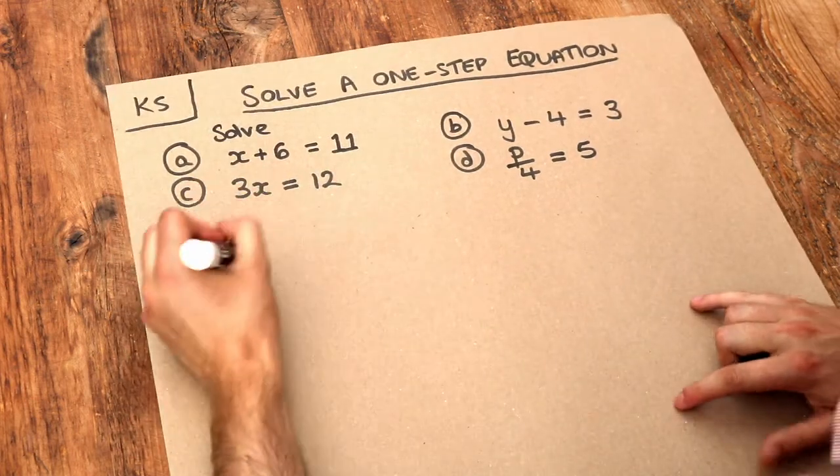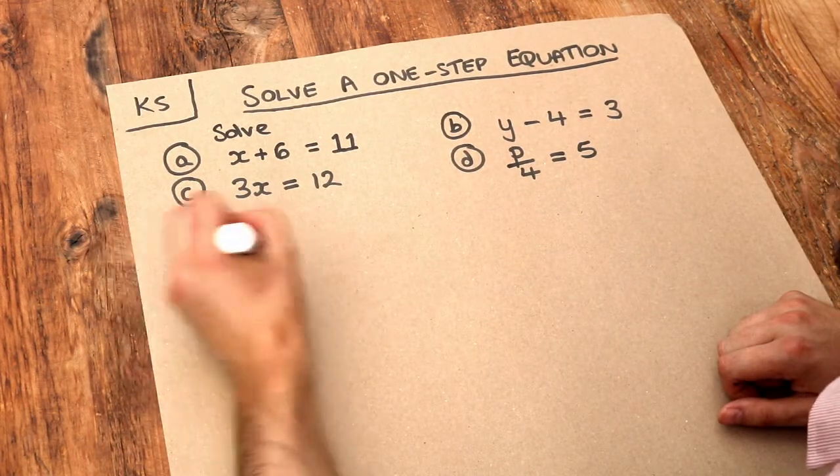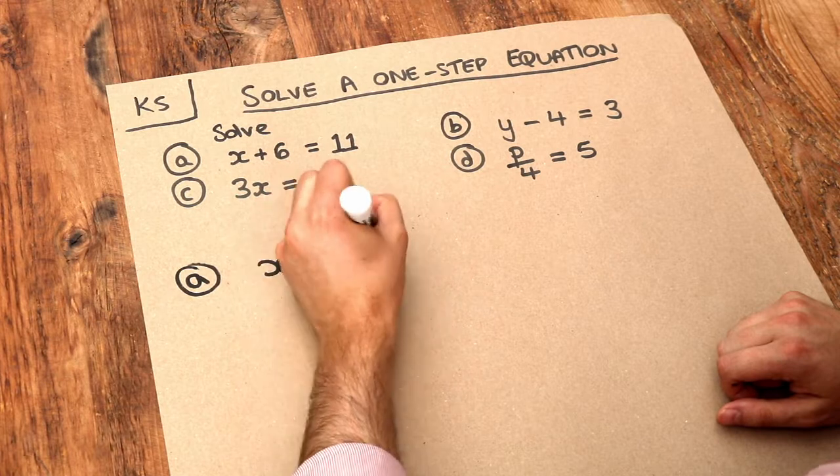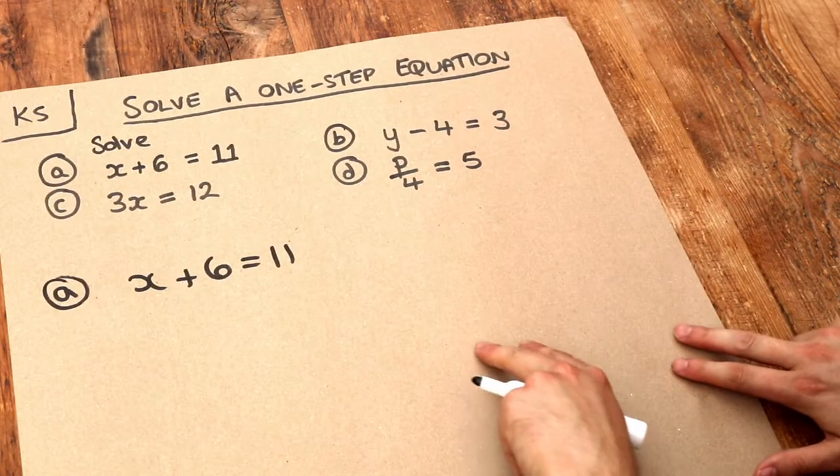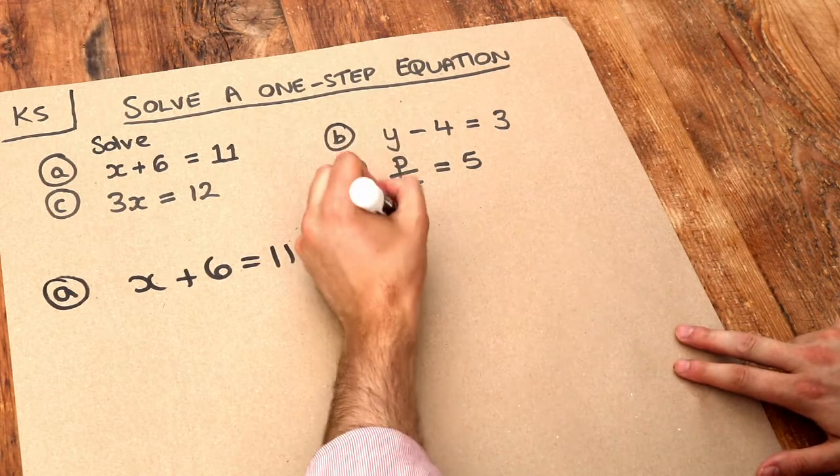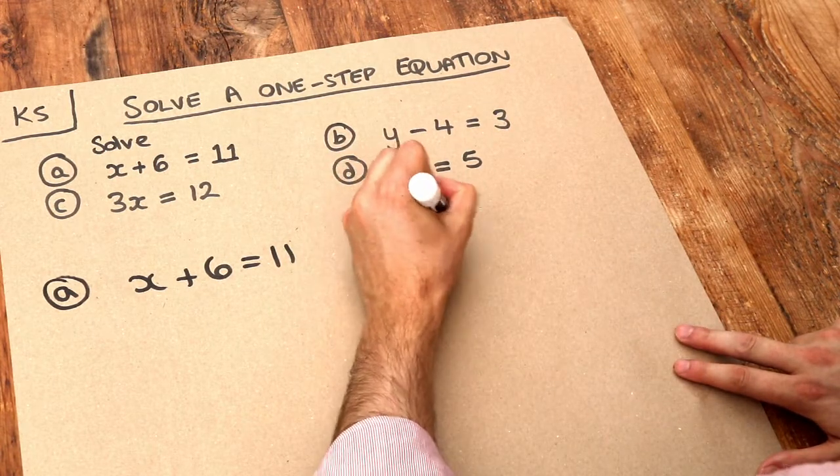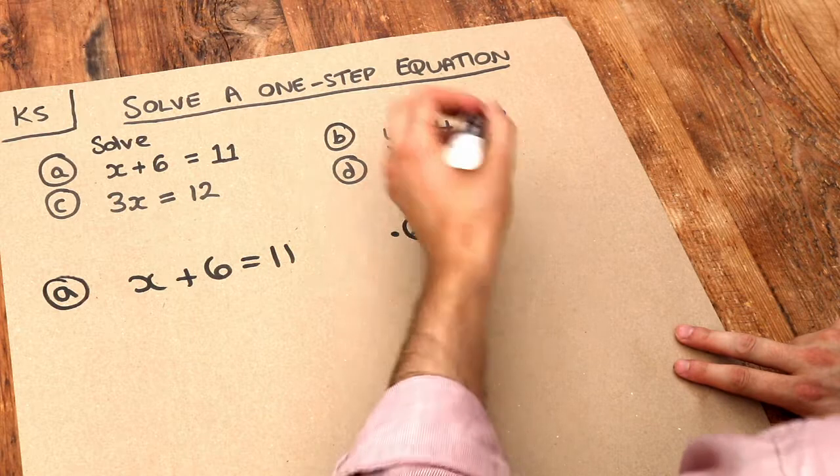But if you want to show some working, I'll show you what we can do here. If you've got x plus 6 is 11, the strategy is to get x on its own, or whatever the variable is, if it's y, etc.